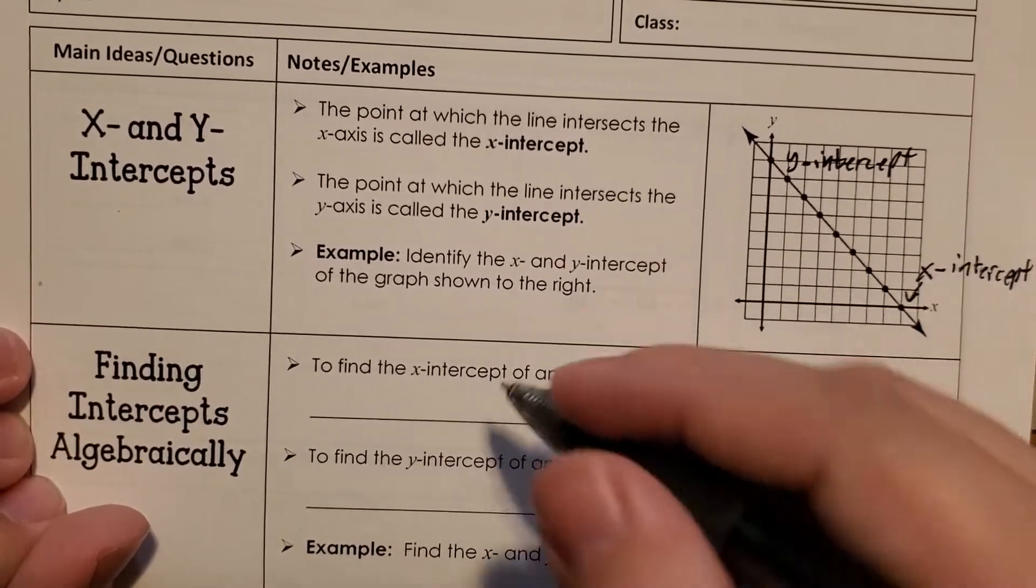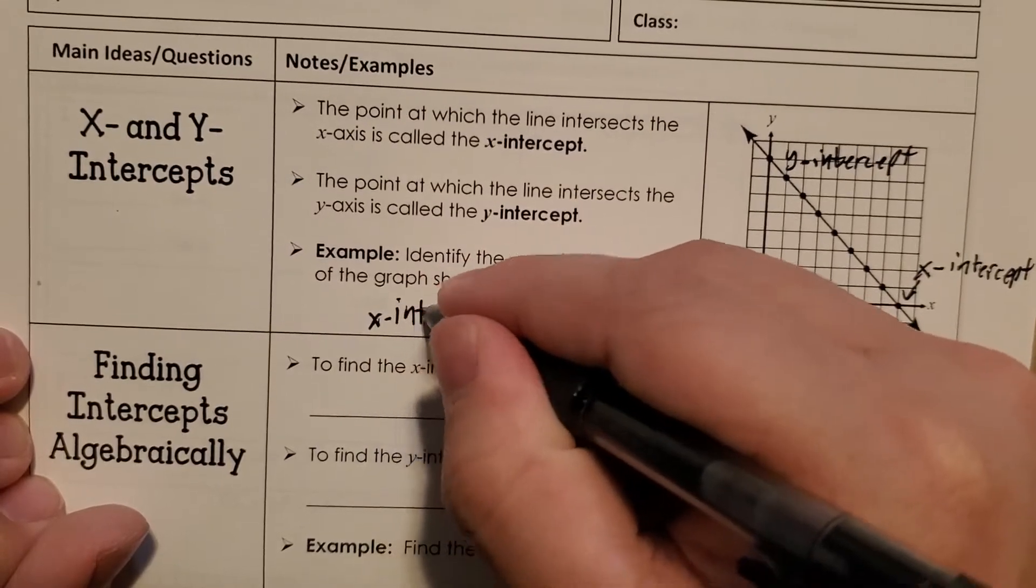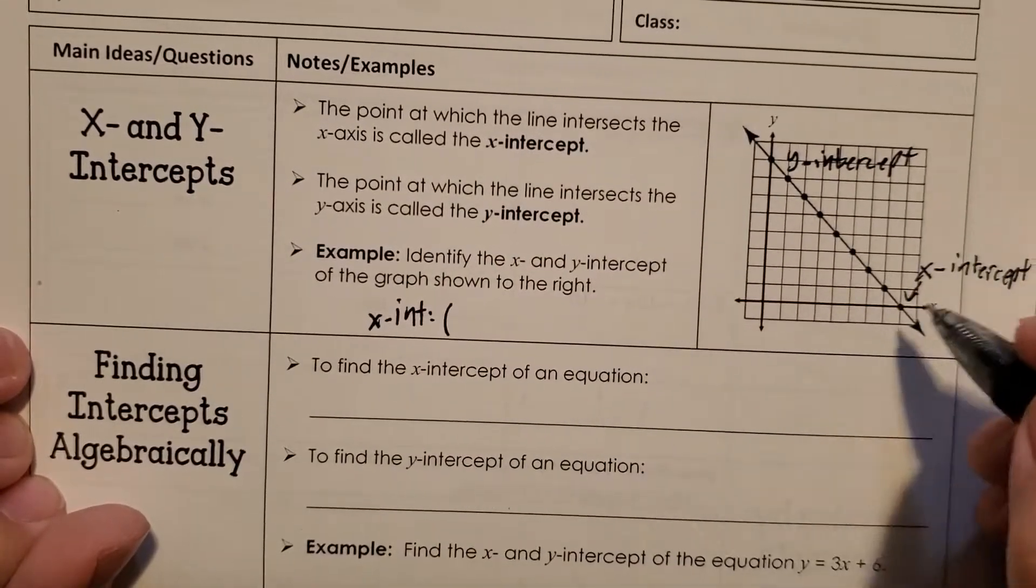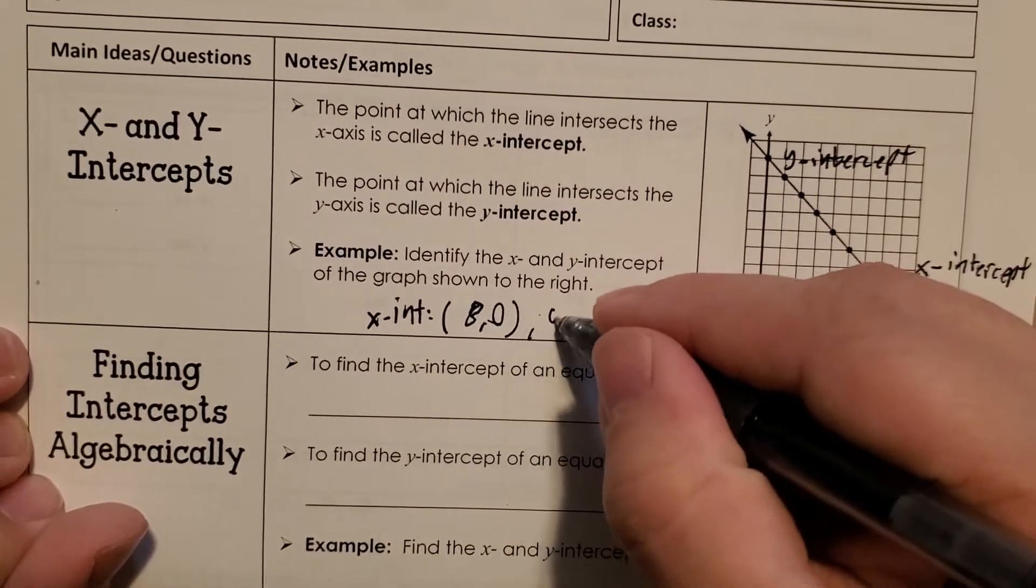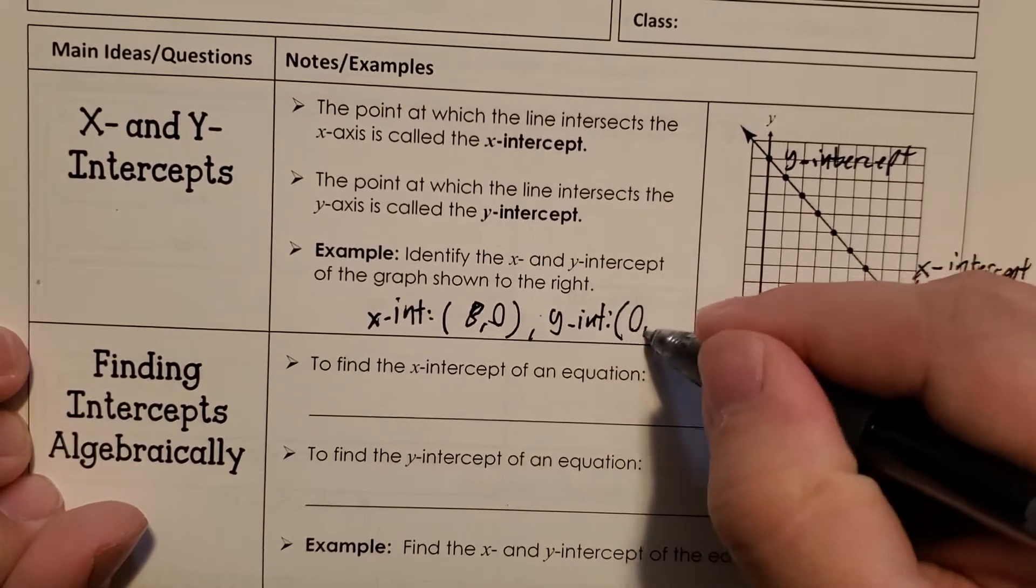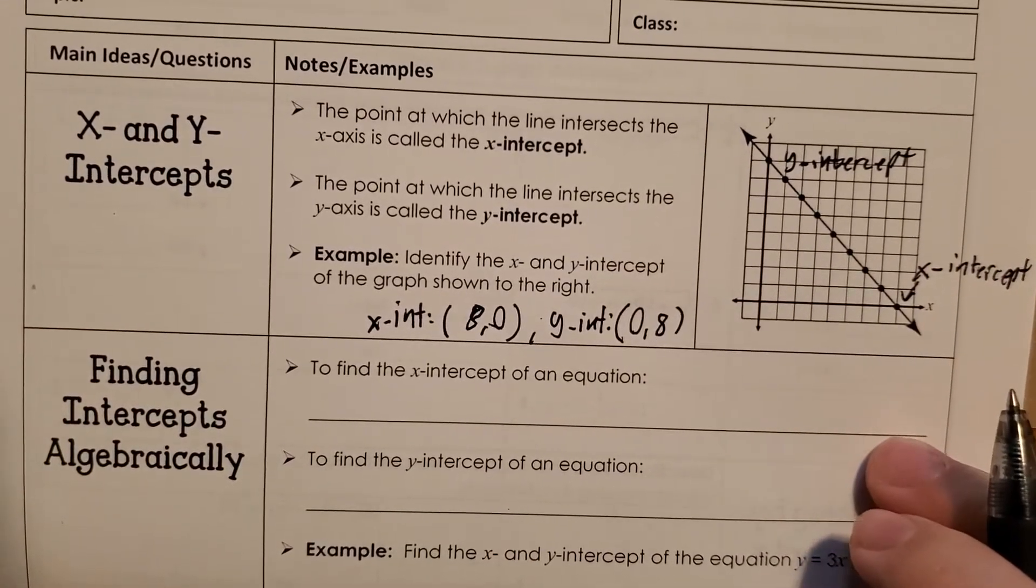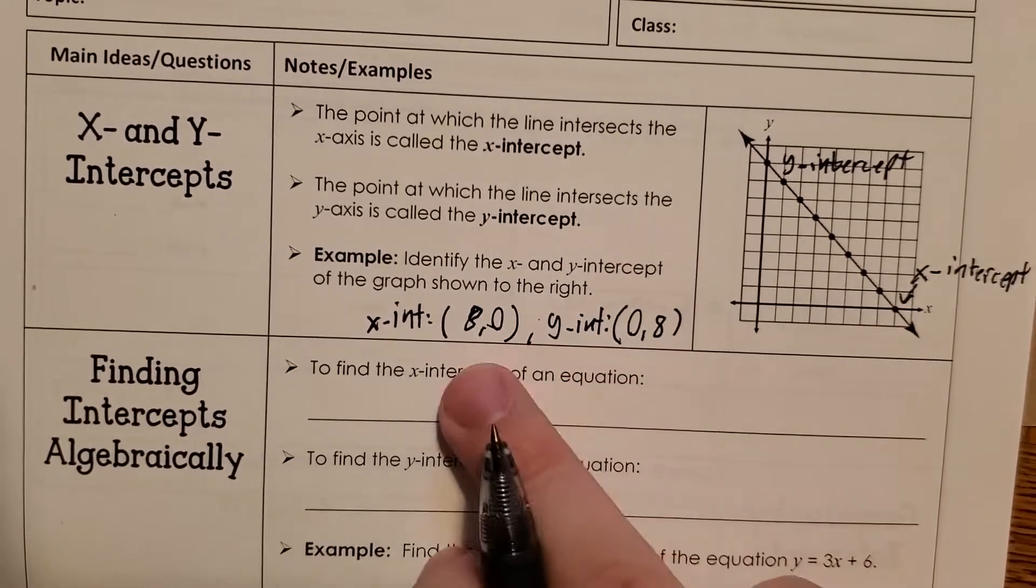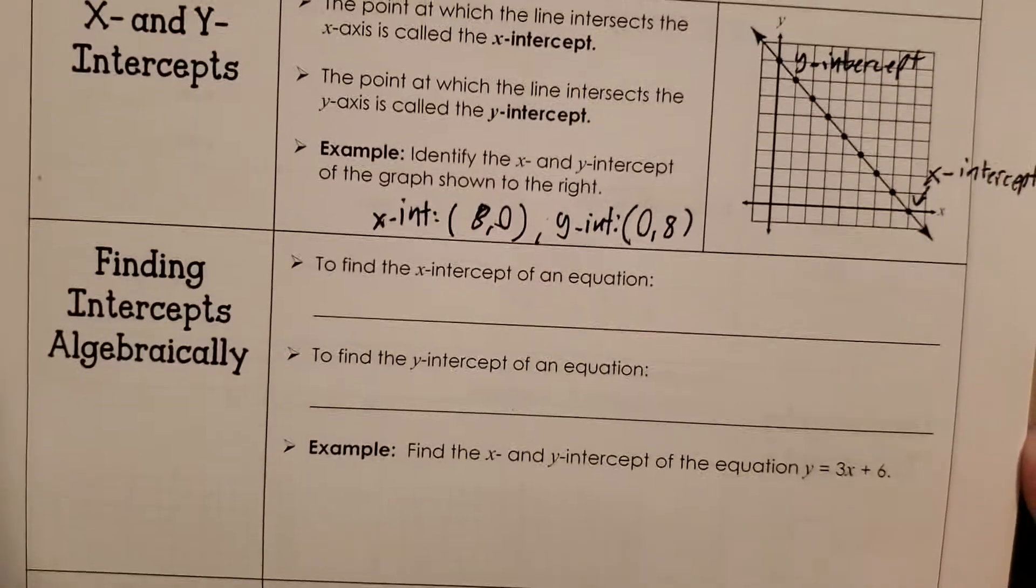And what are these points? Well, the x-intercept is at 8, 0. And the y-intercept is at 0, 8. So we kind of see some interesting things here with these zeros, right? And we're always going to see that no matter what, because they're intercepts.